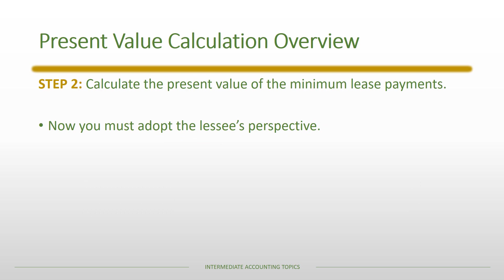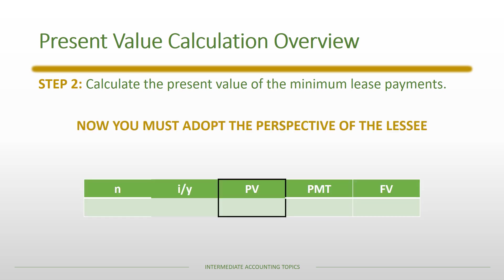After you've done that, the second step is to calculate the present value of the minimum lease payments, and now you have to switch from the lessor's perspective to the lessee's perspective. In the TVM calculation, you can see the present value is highlighted. You would have already calculated the I/Y from the prior step, and then you have to reevaluate the other three pieces to make sure you've adopted the lessee's perspective correctly.